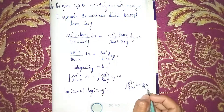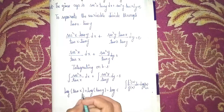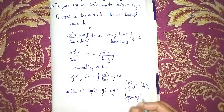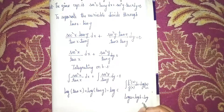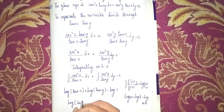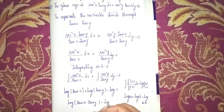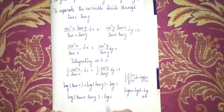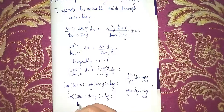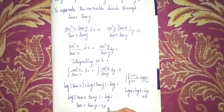We write the constant as log C. Using the logarithm formula log a plus log b equals log(a times b), it becomes log(tan x times tan y) equals log C. The log cancels on both sides, so our final answer is tan x times tan y equals C. Thanks for watching.